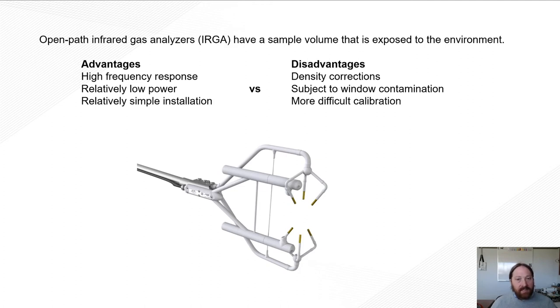The open path is also subject to window contaminations. So because it's exposed to the environment, bird droppings or rain or other contaminants can get on the windows and affect our signal strengths. Now we calibrate for this in the factory, but when things aren't spectroscopically flat, we can't account for that, and we can get errors in our measurement.